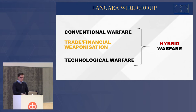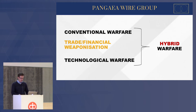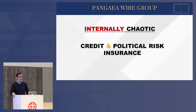So this matters in three main ways. In trade finance and trade in general, there are three main reasons to care. Firstly, the characteristics of nations — they become more internally chaotic as powers grow. This really matters in the trade and political risk insurance side of things.